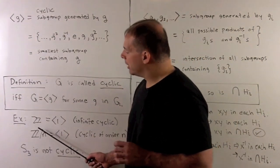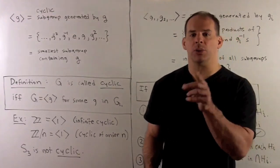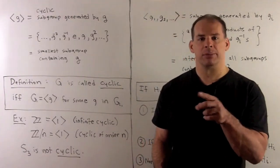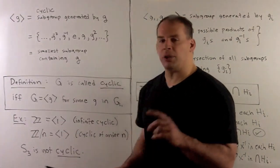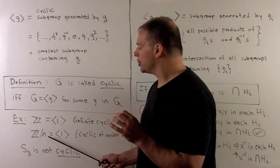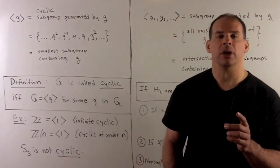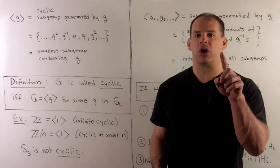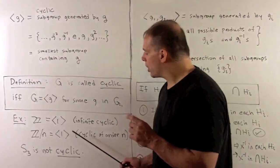For examples: the integers under addition are generated by 1. Adding 1 to itself gives all positive integers; the inverse is minus 1, and adding it repeatedly gives all negative integers. Including 0, we get everything. This is a cyclic group; because it has infinitely many elements, we call it infinite cyclic. On the other hand, the modular integers Z mod n for some positive integer n greater than 1 are also generated by 1: think of a clock, starting at 1 and repeatedly adding 1 until we cycle back, sweeping out all labels in Z mod n. We call this the cyclic group of order n.